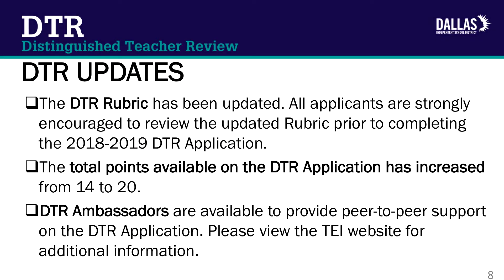There are three updates that impact the 2018-2019 Distinguished Teacher Review. 1. The DTR rubric has been updated. All applicants are strongly encouraged to review the updated rubric prior to completing the DTR application. 2. The total points available on the DTR application has increased from 14 to 20. Specifically, teachers may earn up to 8 points by demonstrating examples of their leadership and up to 6 points by demonstrating examples of their lifelong learning and contributions to the profession, respectively. DTR ambassadors are available to provide peer-to-peer support on the DTR application. Please view the TEI website for additional information.